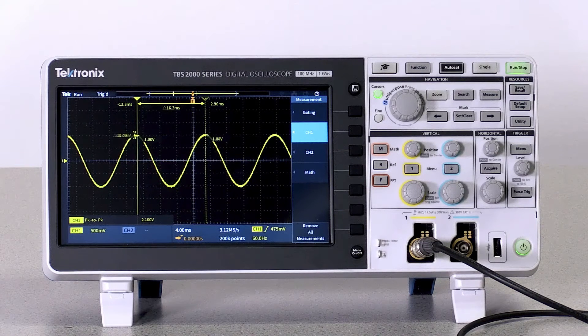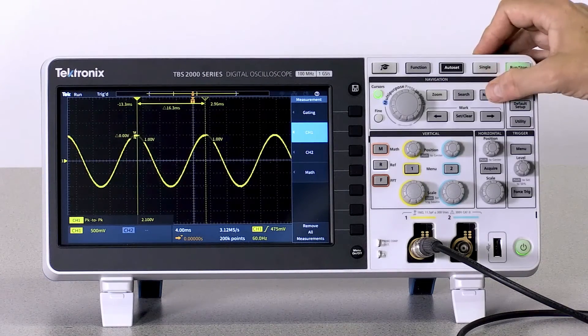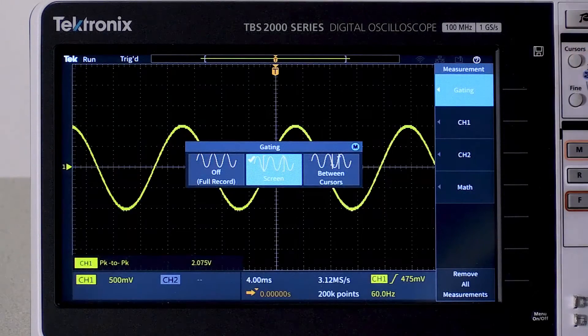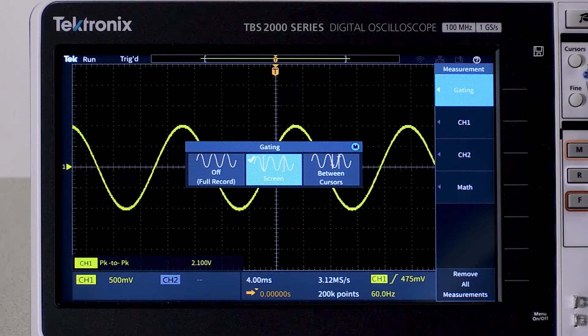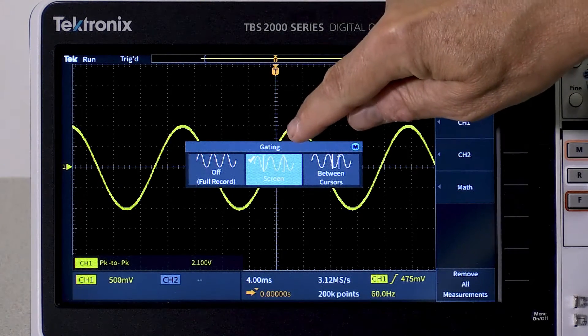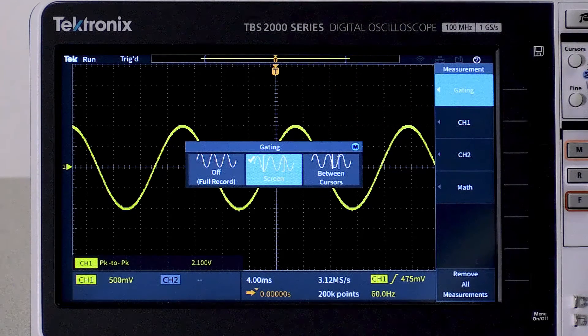Let's take a look at how this works on a scope. I'm going to select the measurements from the measurement menu. First, let's check the gating. Gating determines which sample points are used to calculate the measurement. For this example, we'll use screen gating. This will use the sample points on the screen to calculate the measurements.